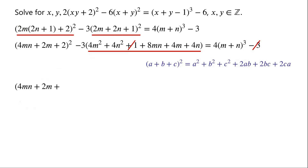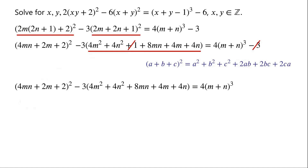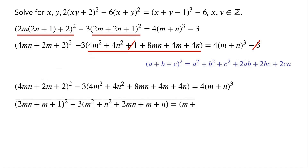So the equation becomes: (4mn plus 2m plus 2), all squared, minus 3 times (4m squared plus 4n squared plus 8mn plus 4m plus 4n), equals 4 times (m plus n), all cubed. As each term in the equation has a factor of 4, we divide the equation by 4, giving: (2mn plus m plus 1), all squared, minus 3 times (m squared plus n squared plus 2mn plus m plus n), equals (m plus n), all cubed.